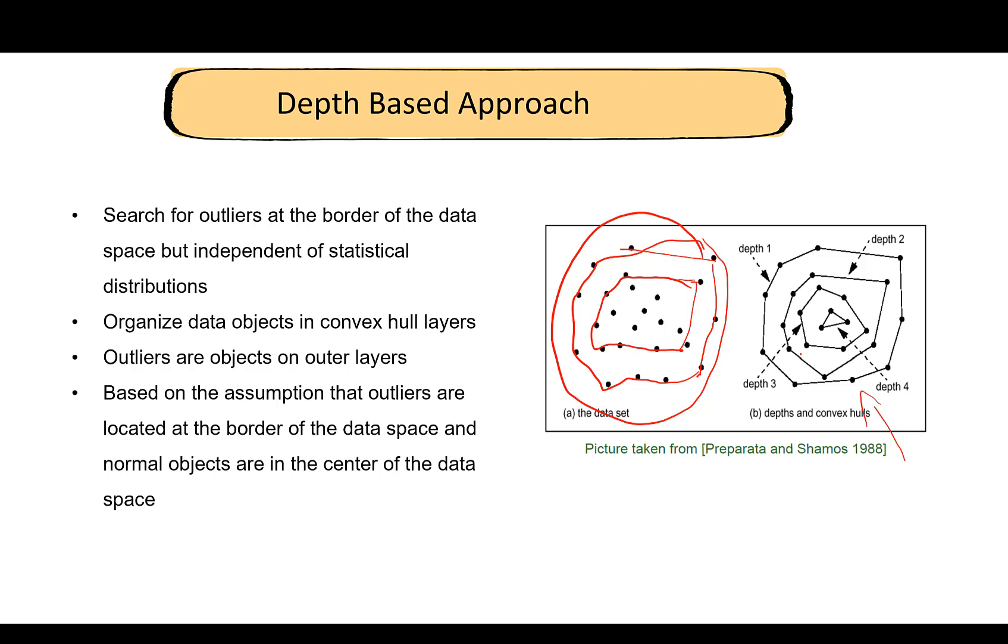Whichever method you choose to use to pick out outliers, you have to see if it makes sense. For example, if this is your data set, which is a very artificial data set, which point would you think is the outlier? The points along the outer circle or the inner dot? If you go by the depth-based approach, all of the points on the outer circle are an outlier. That doesn't make sense. Visually, if you had to guess an outlier, it would be this inner point. Always see if your results from the particular method that you choose to use are sensible.